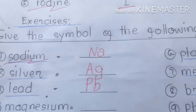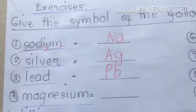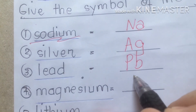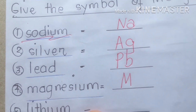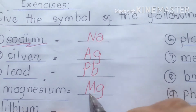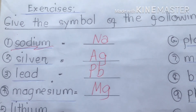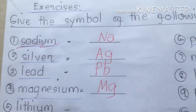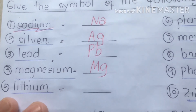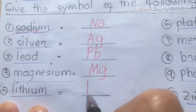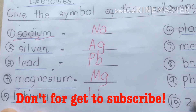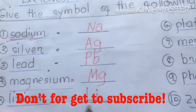Number four is magnesium — uppercase M, lowercase g, written as Mg. Number five is lithium — uppercase L, lowercase i, written as Li. That is lithium.